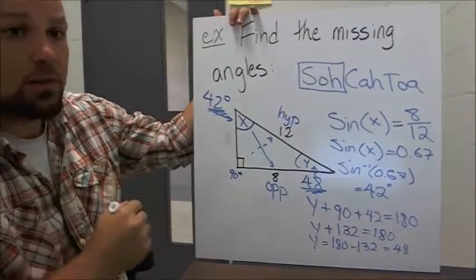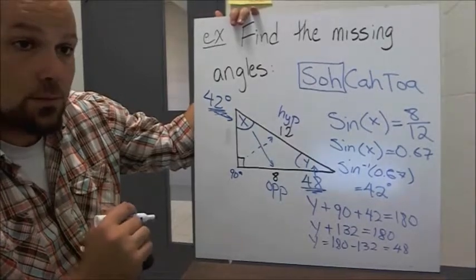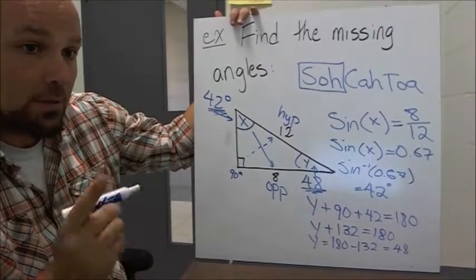And that's it, we found all the missing angles. So that's using SOHCAHTOA to find the angles that we don't know. Alright, that's it.